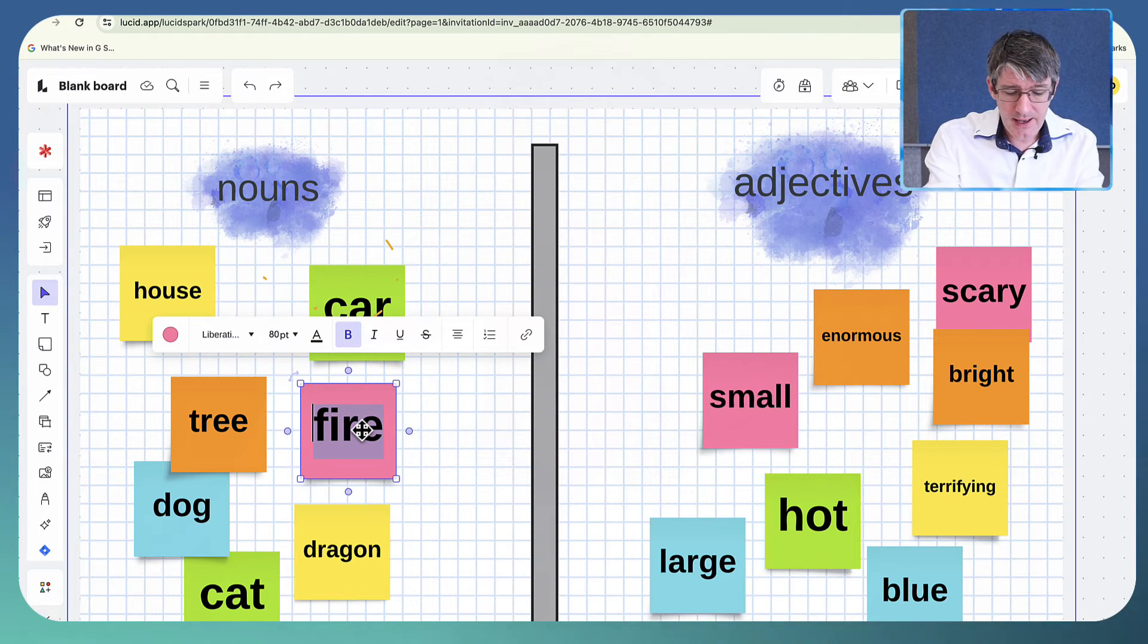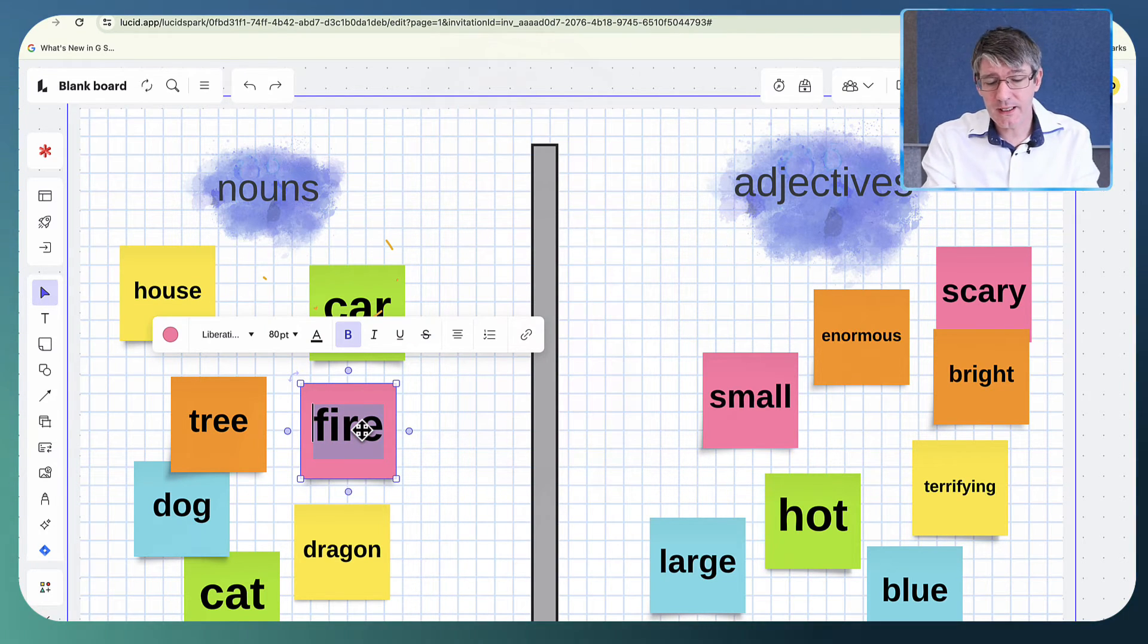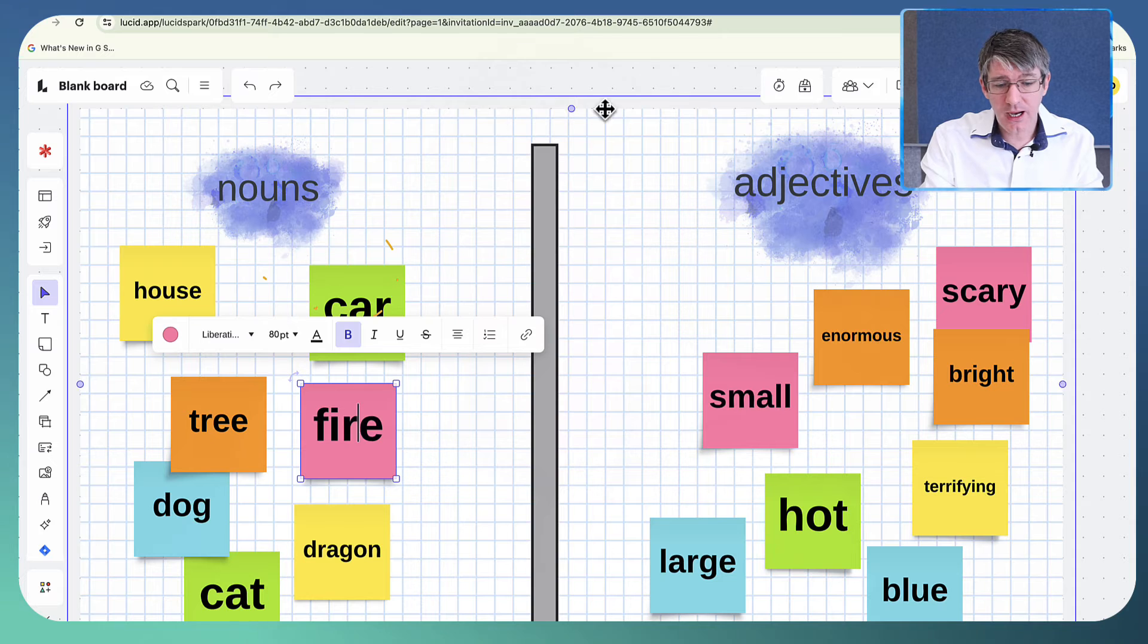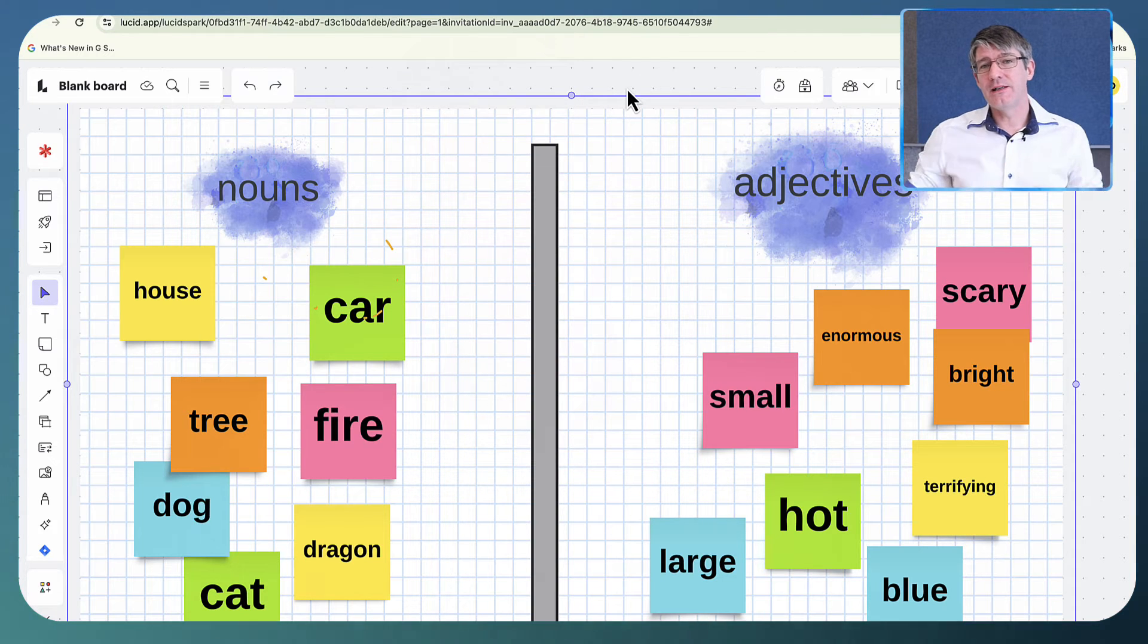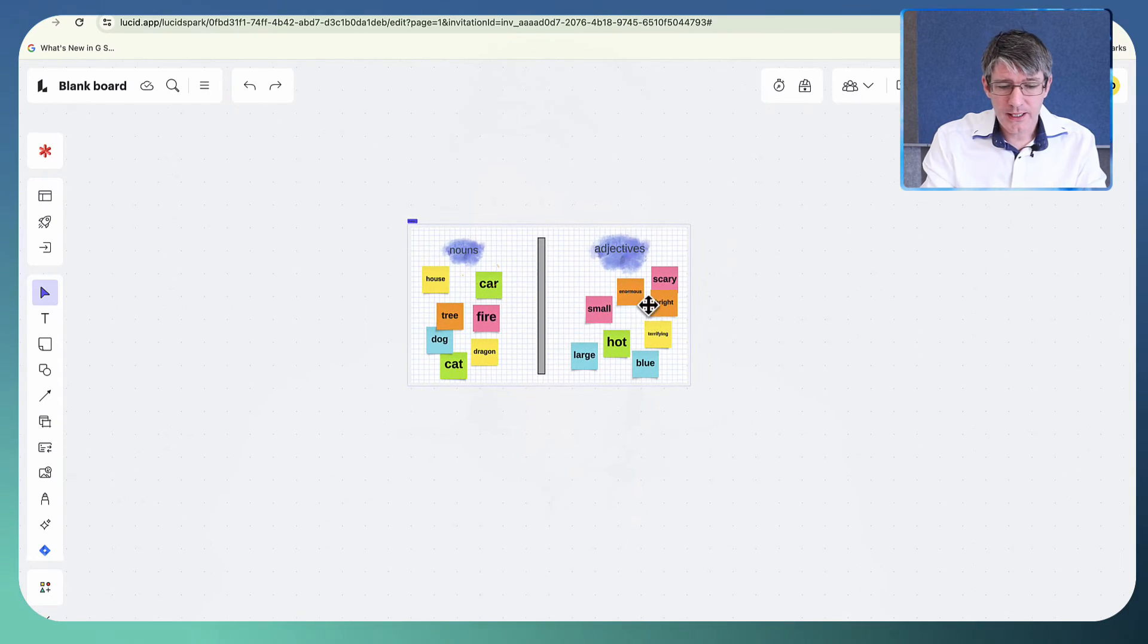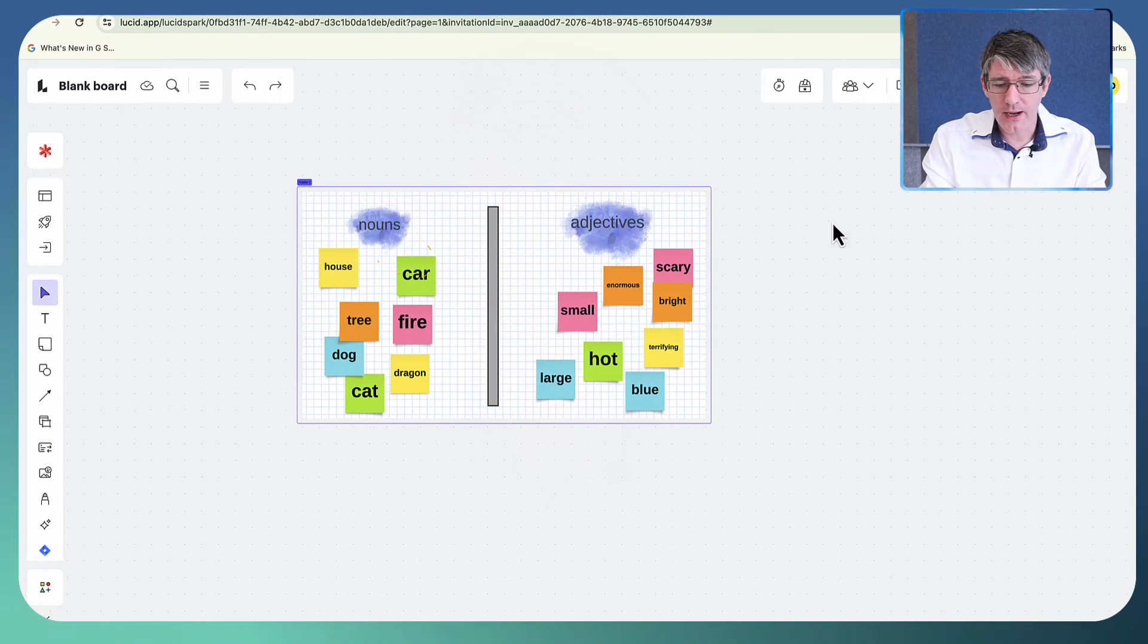You can double-click on it and I can change it. You can see here I can edit this. I can edit the text, change everything. Now that it's in Lucid Spark, I also have access to that endless canvas. So you can see here I can zoom out, I can move around, and I can add more elements to the sides of this Jamboard.